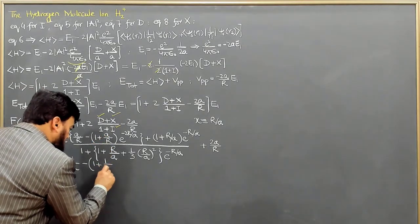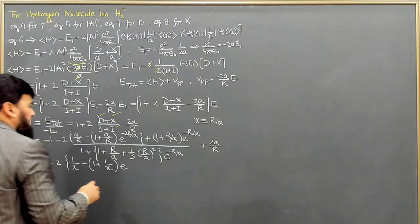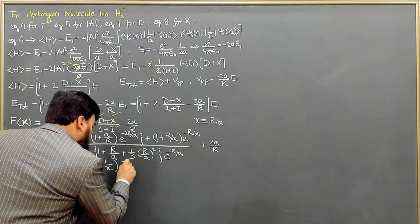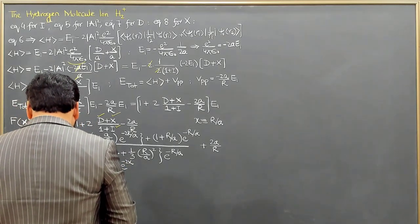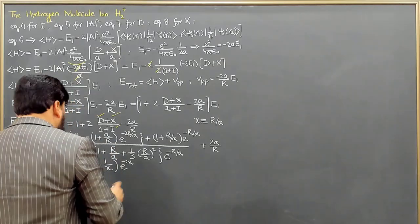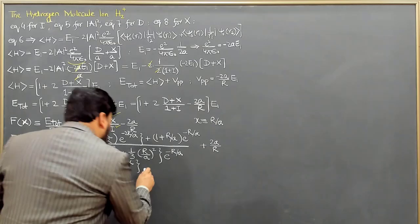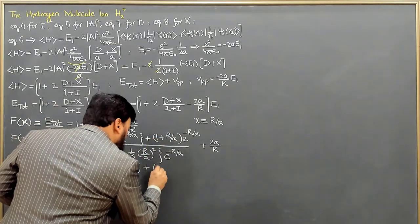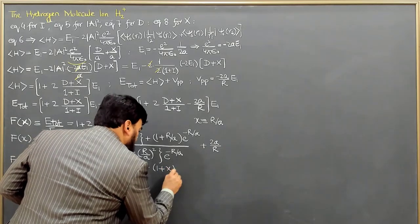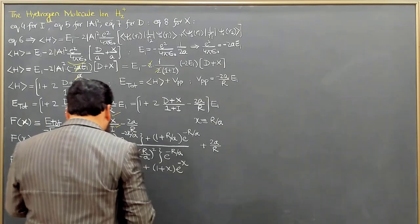So it is again 1 over x, then e to the power r over a, so this is minus 2x. And further, let's complete here this one and then plus 1 plus r over a, so 1 plus x and e to the power minus x, because minus r over a.